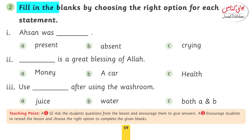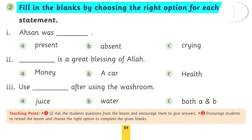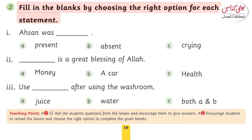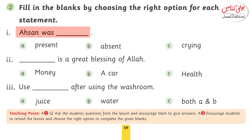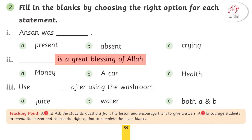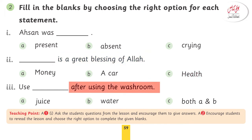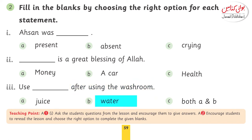The second question is: fill in the blanks by choosing the right option for each statement. You have a statement with three possible words to fit in. Number 1: Ahsan was — options are present, absent, or crying. He was absent. Number 2: Dash is the great blessing of Allah. The correct answer is health. Number 3: Use dash after using the washroom — options are juice, water, or both A and B. Use water after using the washroom.